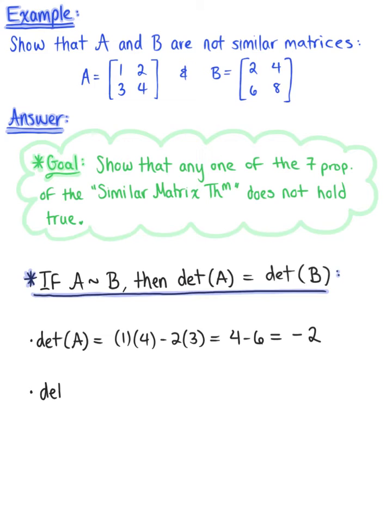And very similarly, we have the determinant of matrix B, which is equal to 2 times 8 minus 4 times 6. So we have 16 minus 24, which leaves us with negative 8.